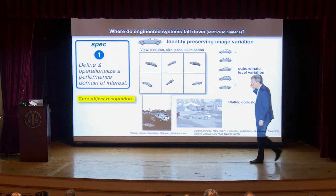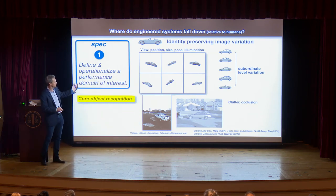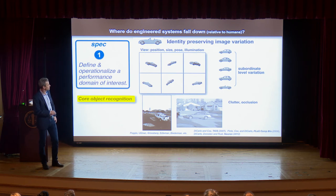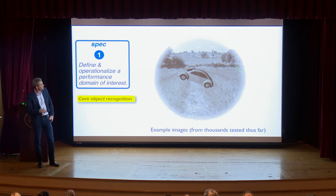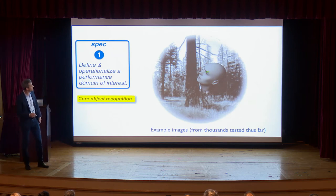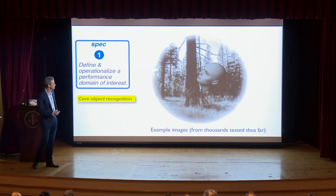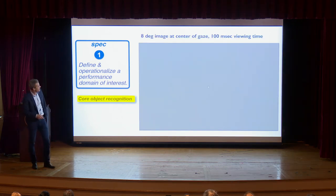This problem is hard — objects like cars can produce an essentially infinite number of images due to pose, size, illumination, background clutter, occlusion, and subordinate-level variation. We engage this by generating images with a single rendered foreground object on a naturalistic background. These kind of images brought computer vision systems to their knees around 2008, yet humans easily solved them. We could crush all computer vision systems with that simple image generation process.